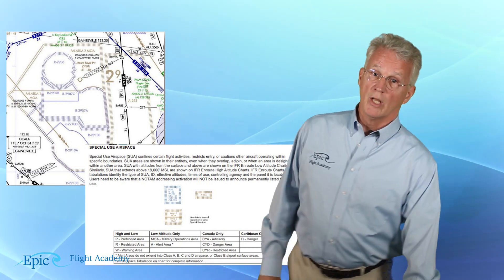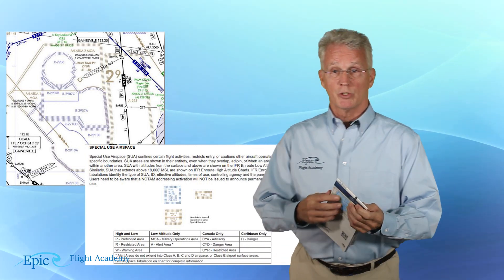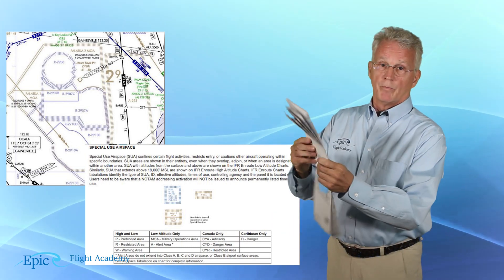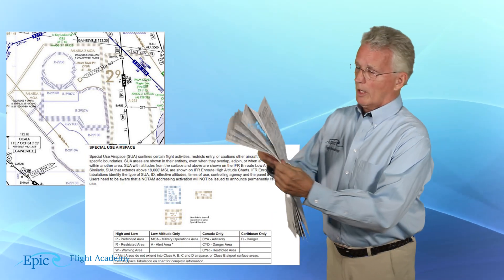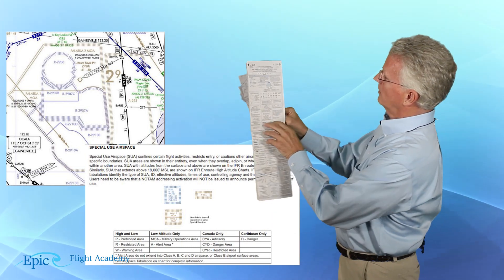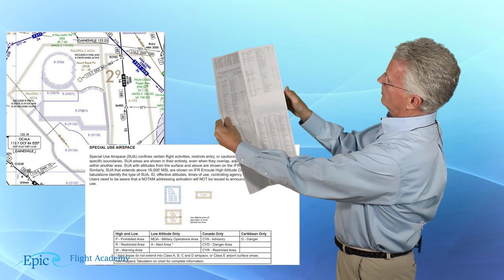Refer to AIM Section 3 for airspace and review this with your flight instructor. If you're using a paper chart, note that special use airspace is also listed in the margin.